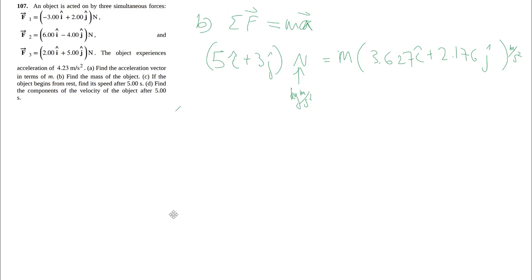Looking at the i component, technically you only have to do one of the components because m will be the same in both ways. So we have 5 kilogram meters per second squared divided by 3.627 meters per second squared. If those cancel out, you get kilograms. That, of course, is your mass, which then gets us 1.379 kilograms.